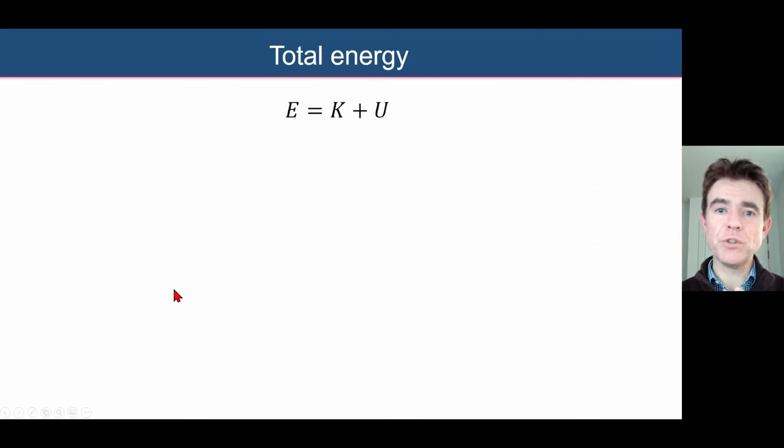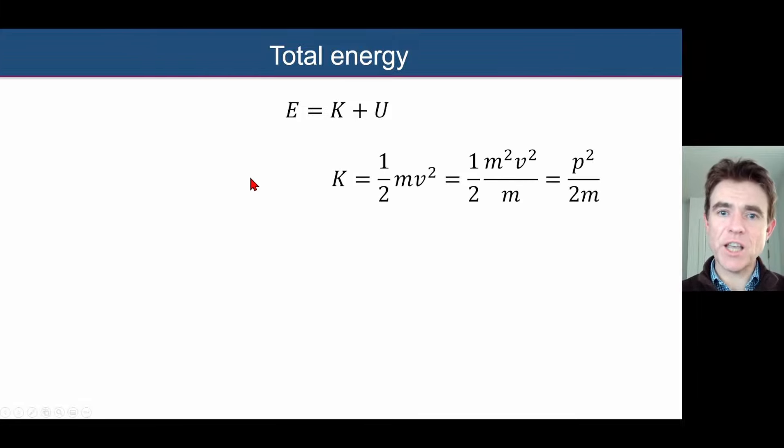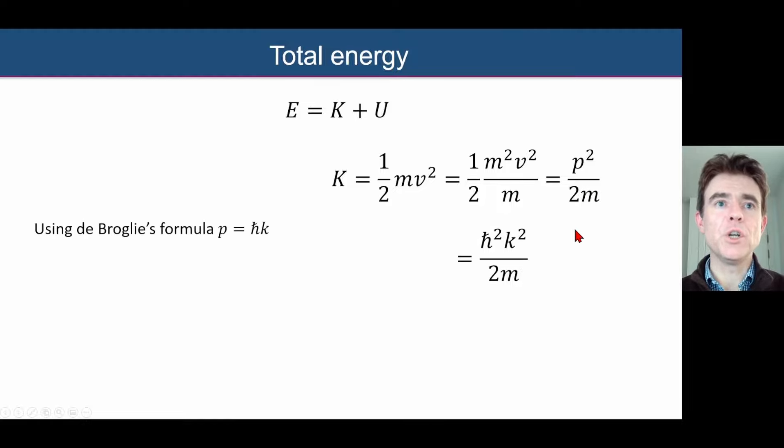Let's move on then to now consider the total energy of an electron in orbit of a proton in a hydrogen atom. We can say the kinetic energy of that electron is the well-known half mv squared. Now if we multiply top and bottom of this expression by m, then we get m squared v squared over m, in other words, p squared, because p is equal to mv. Now what have we just shown before? We have shown with de Broglie's formula that the momentum p is h cross k, and therefore we can plug that into this expression to say that the kinetic energy of the electron is h cross squared k squared divided by 2m.